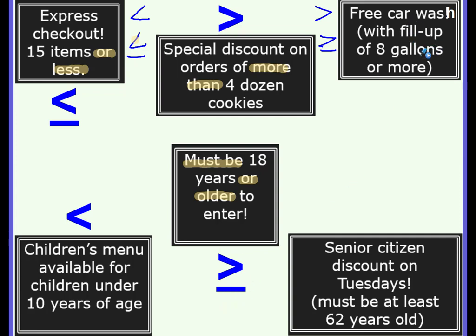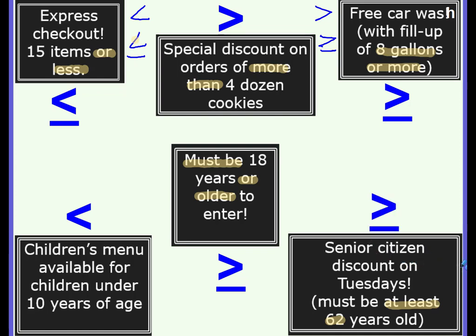'Free car wash with a fill-up of eight gallons or more' — so the amount of gas has to be eight gallons or more, which is greater than or equal to. 'Senior citizen discount on Tuesdays — must be at least 62.' Can you equal 62? Yes. Can you be less than 62? No. So it has to be greater than or equal to 62.